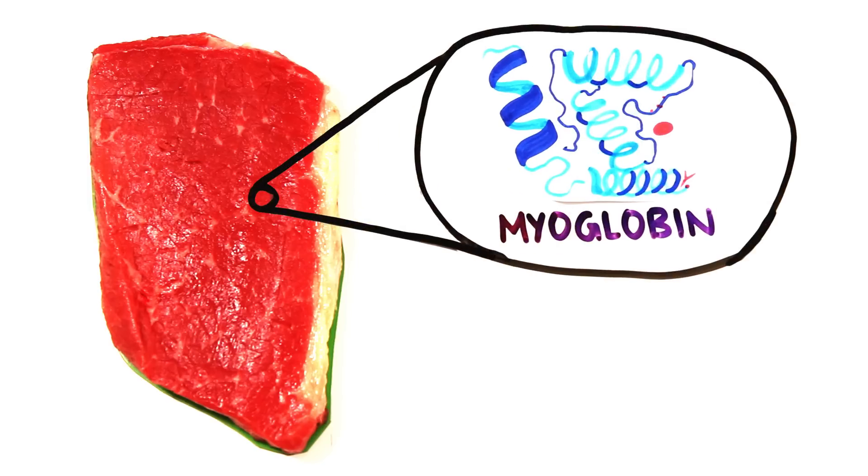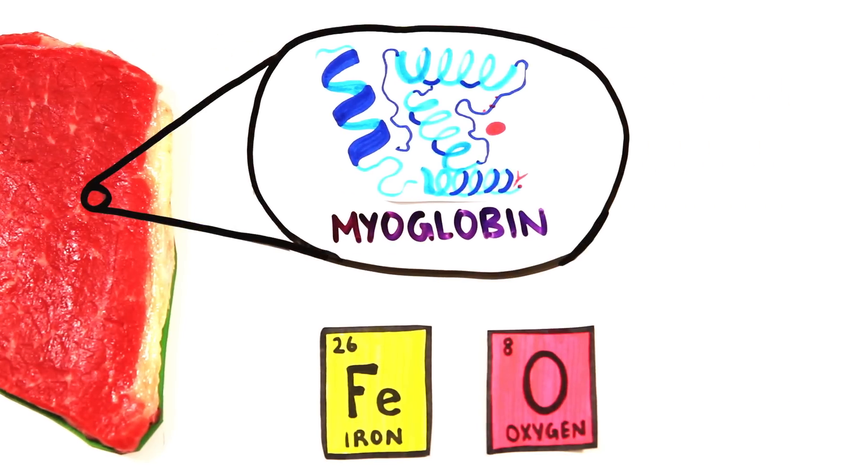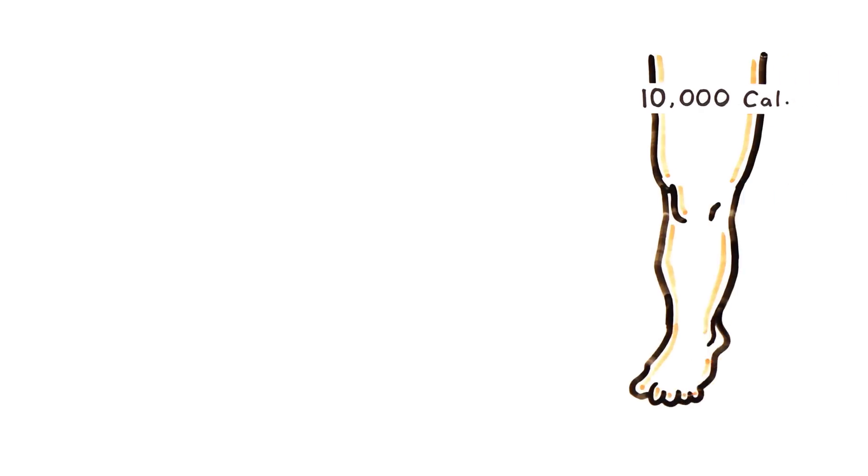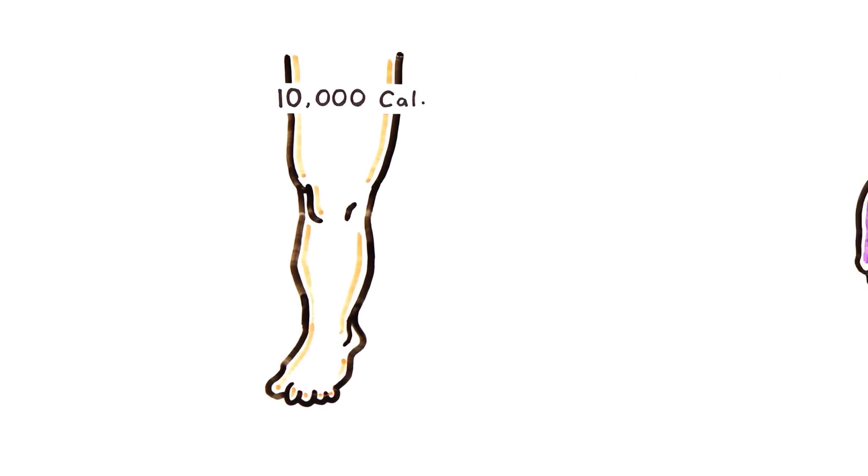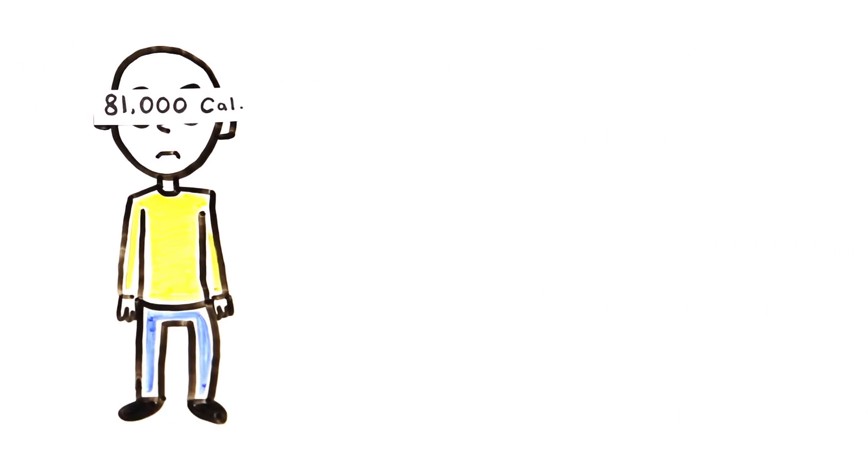Speaking of blood, we're definitely red meat. This is due to myoglobin, an iron and oxygen binding protein found in muscle tissue. Your nutritional value? Well, your thigh is around 10,000 calories, your heart 700, and your entire body? Around 81,000 calories.